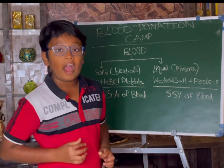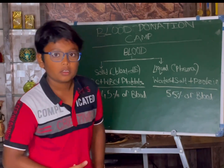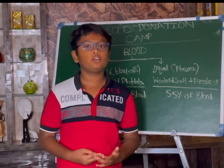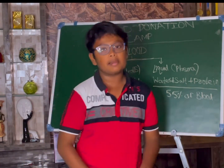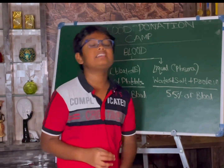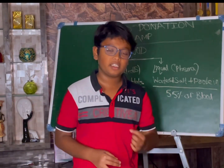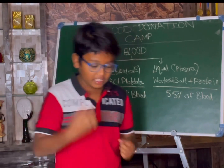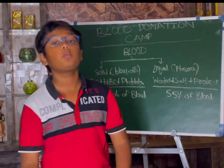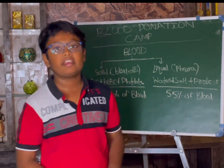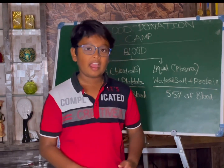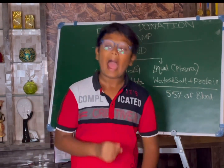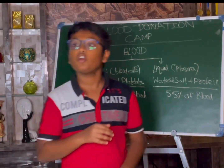Now I will talk about blood groups. Blood groups have 4 major types: A blood group, B blood group, O blood group, and AB blood group. A blood group has antigen A and antibody B. B blood group has antigen B and antibody A. O blood group has no antigen and has antibody AB. AB blood group has antigen AB and no antibody.